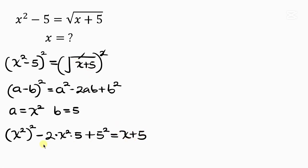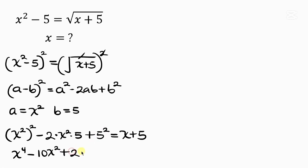Now let's simplify the left hand side. From indices, powers multiply, so 2 times 2 gives 4, making x to the fourth. Then minus 2 times x squared times 5 is 10x squared, plus 5 squared is 25. This equals x plus 5.